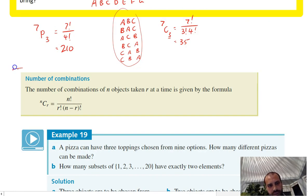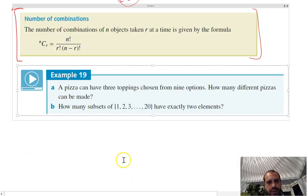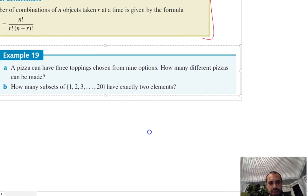We have this handy formula here that we can use. nCr is equal to n factorial, which in this case was the seven, over r factorial, which was the three in that case, times n minus r, which was the seven minus three, which was the four in that case. This is the formula we can use for the number of combinations. I'm going to do a couple of quick questions using combinations here. Pizza can have three toppings chosen from nine options. How many different pizzas can be made?